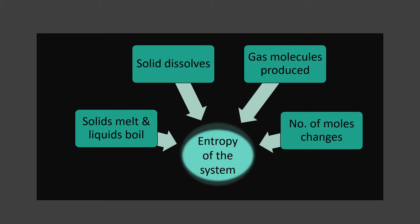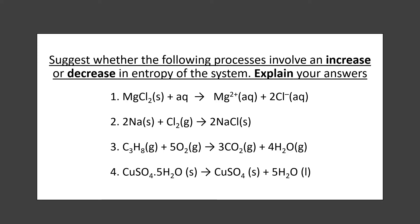Let's try some examples and see how to approach such questions. The question is: suggest whether the following processes involve an increase or decrease in the entropy of the system, and explain your answers. There are two parts: firstly, to say how entropy changes — increase or decrease — and then to explain why. The command word used is 'explain.' Across IAS or IAL science qualifications, this means it requires a justification — the answer must contain some form of reasoning or justification, and it could even be mathematical. However, if the question specifically asks to not include any calculations, you must give your reasoning without the calculation.